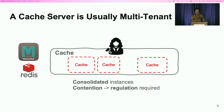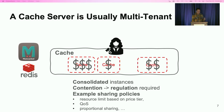Given this, shared caches may have contention across each other, so it's critical to impose some sharing goals in such a setup. For example, in the cloud, cloud providers usually guarantee that a cache will not use more resources than they paid for. There are also other popular sharing policies like quality of service, proportional sharing, and so on.